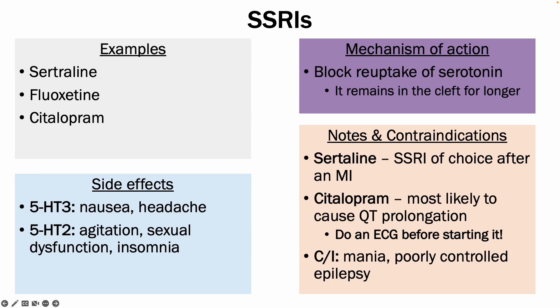Some of the contraindications include mania and poorly controlled epilepsy. Additionally, fluoxetine appears to be the SSRI of choice for those starting one under the age of 18.